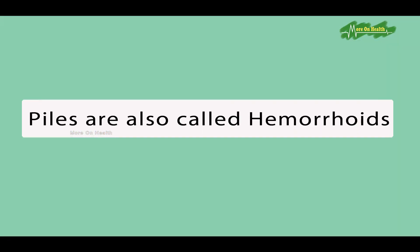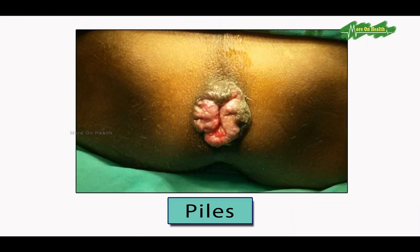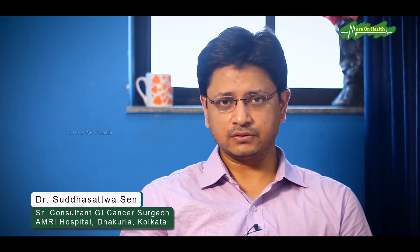Piles are also called haemorrhoids. They are formed inside the anus. The anus has cushion effects — there are multiple anal cushions which are suspended by some ligaments. Because of chronic straining, hereditary habits, or poor food habits, this ligament gets disrupted, causing a descent of the anal cushion. The blood vessels running through the anal cushion come down with it, causing stasis and pooling of blood, giving rise to what is called piles.